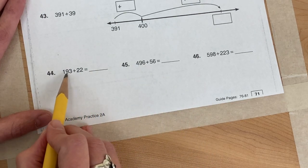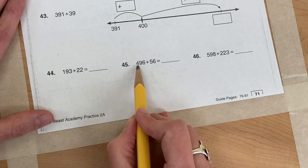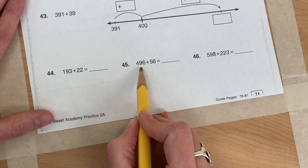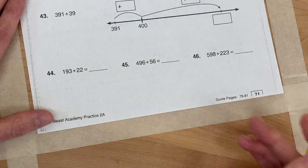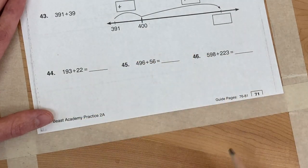And think of where you could go. What is 193 close to? What is 496 close to? What is 598 close to? So keep thinking of those number lines as you do those problems too.